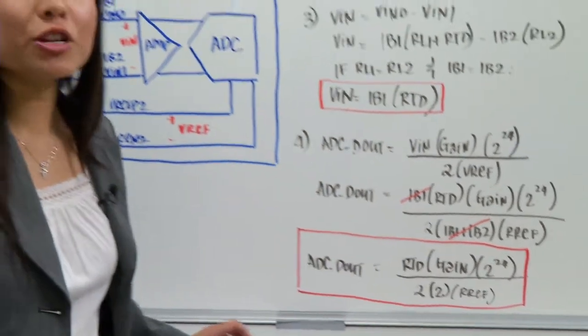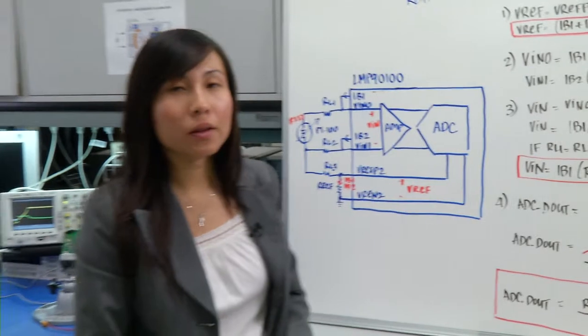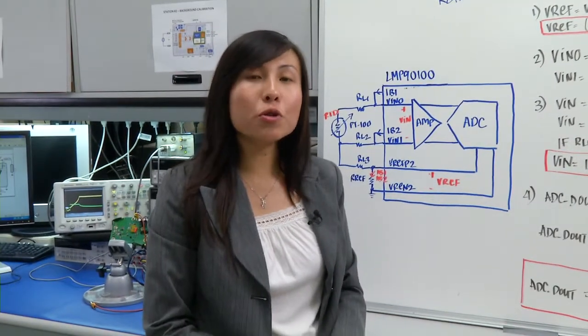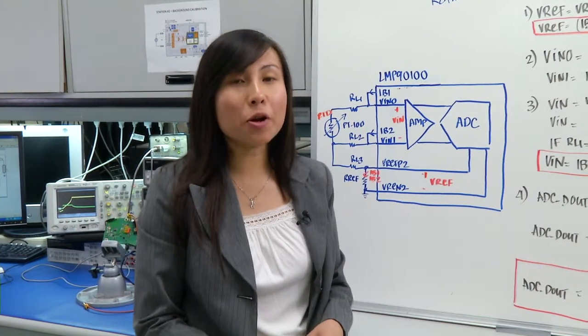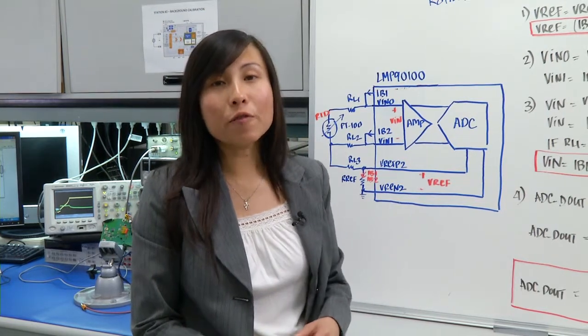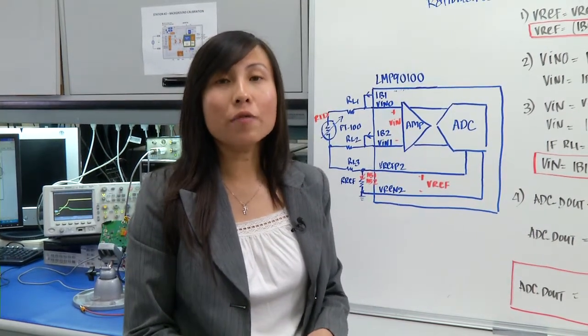So in summary in this video I've showed you how to do a ratio metric configuration for an RTD sensor. With a ratio metric configuration you will eliminate the bias current error of your ADC, therefore increasing the performance of your sensor signal path and of the ADC itself.